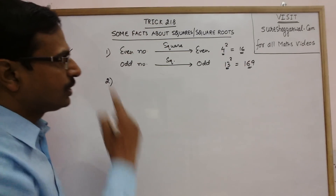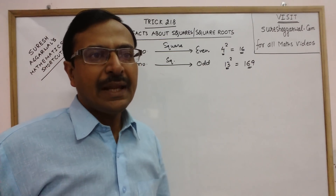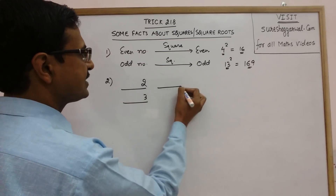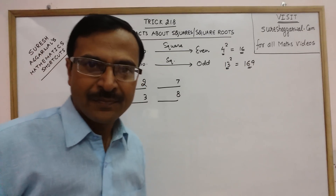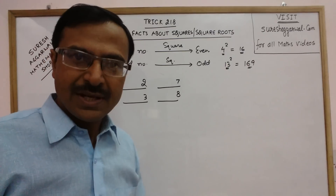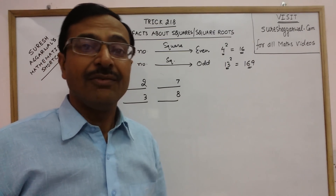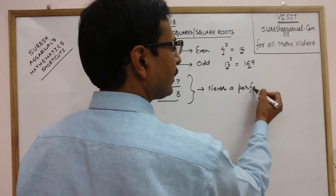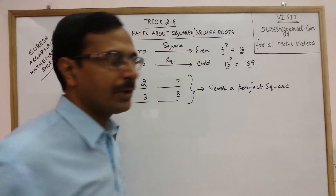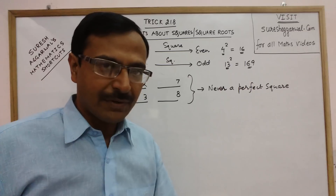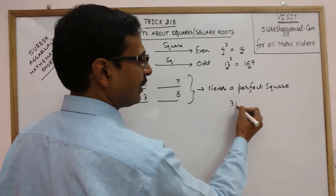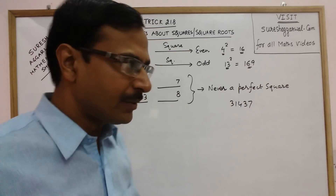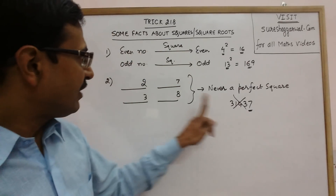The next important fact about squares: suppose any number has a 2, 3, 7, or 8 in the unit's place. Any number having any of these four digits in the unit's place will never be a perfect square. So you can judge just by observing the number whether it may or may not be a perfect square. For example, suppose you have 31,437 — you can very easily say it is not a perfect square because it contains 7 in the unit's place.